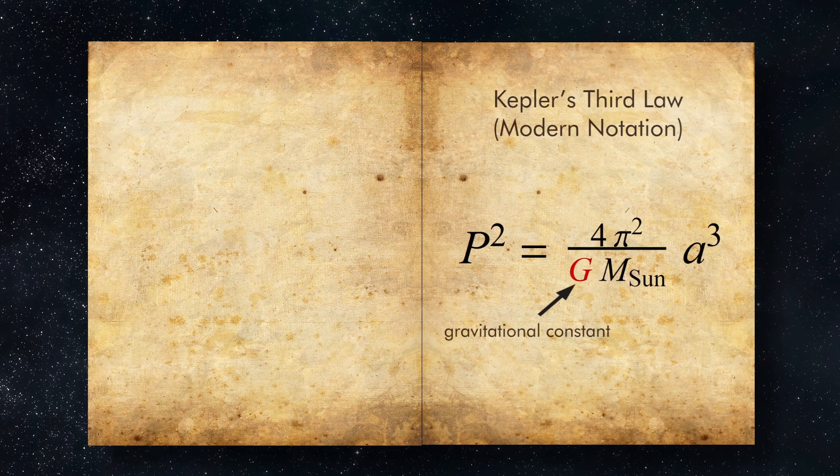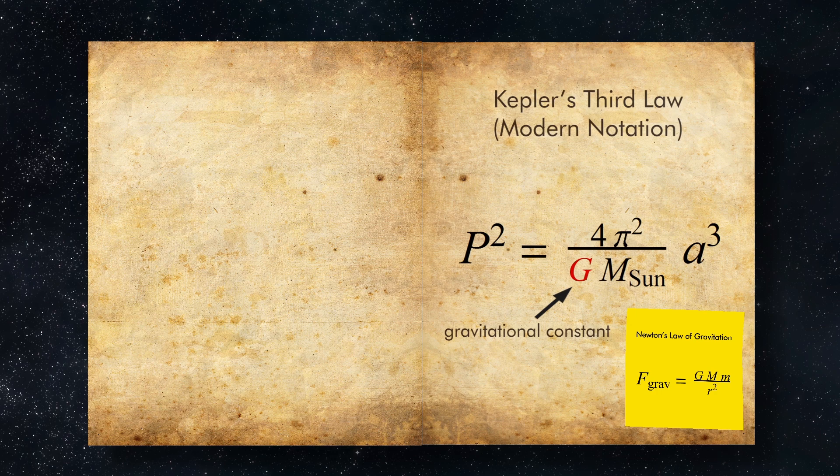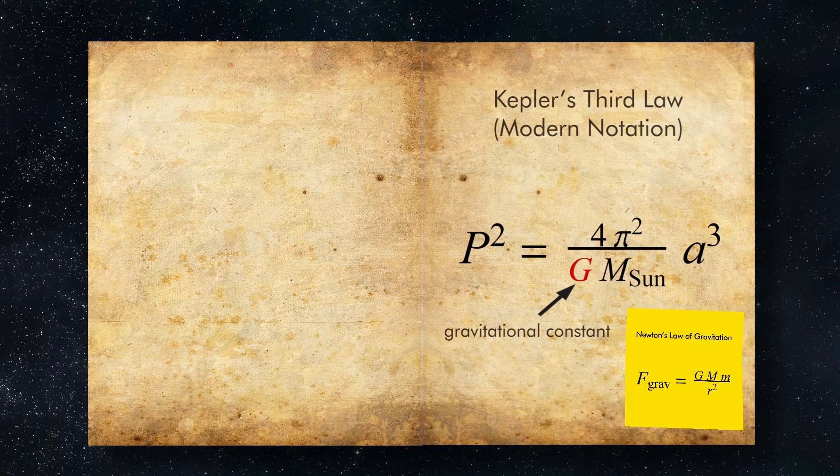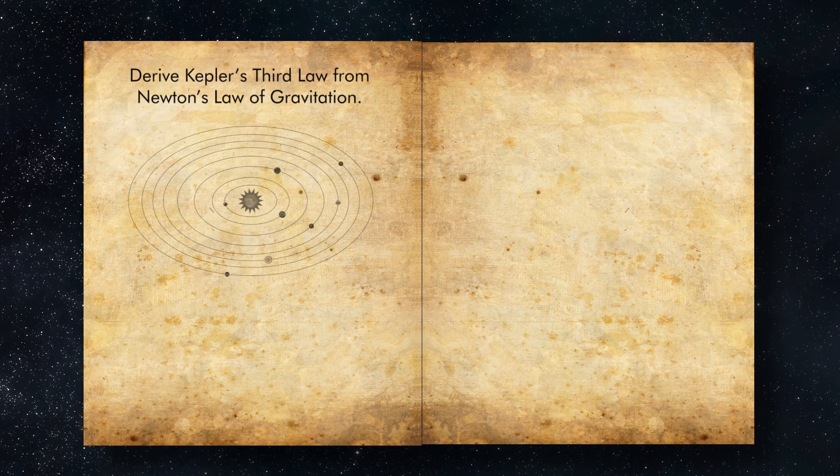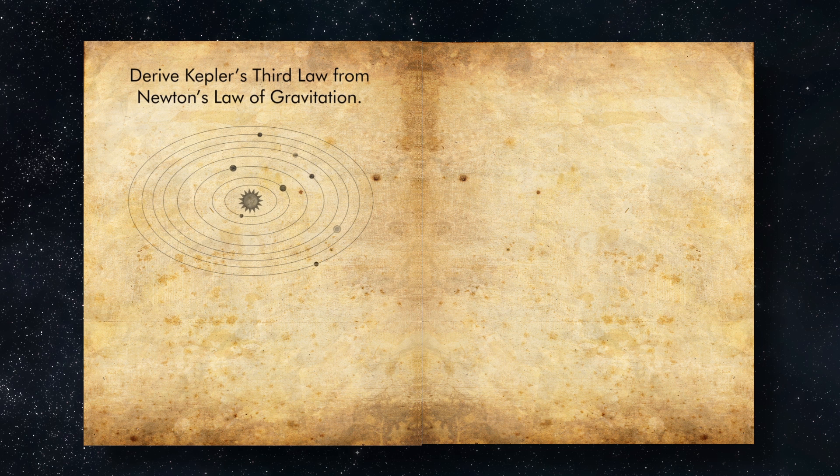G is a gravitational constant, which might look familiar if you've ever seen Newton's Law of Gravitation, which states that the force due to gravity equals G times big M times little m all over the distance squared. Actually, you can derive Kepler's third law from Newton's Law of Gravitation. Although, of course, Kepler didn't know that.